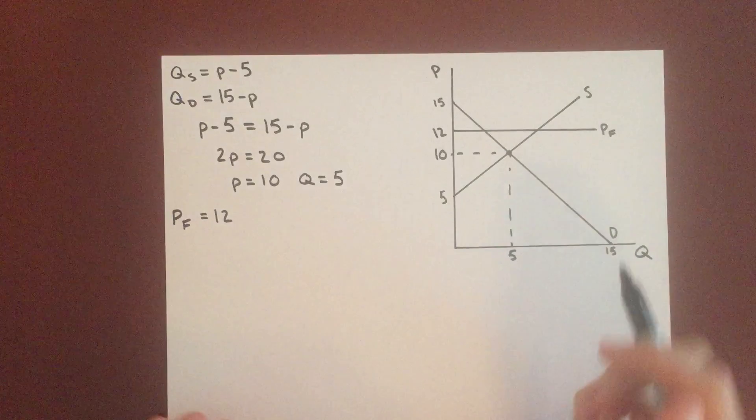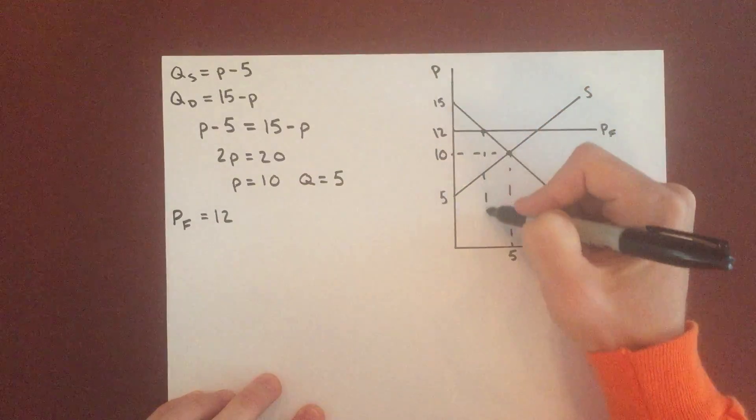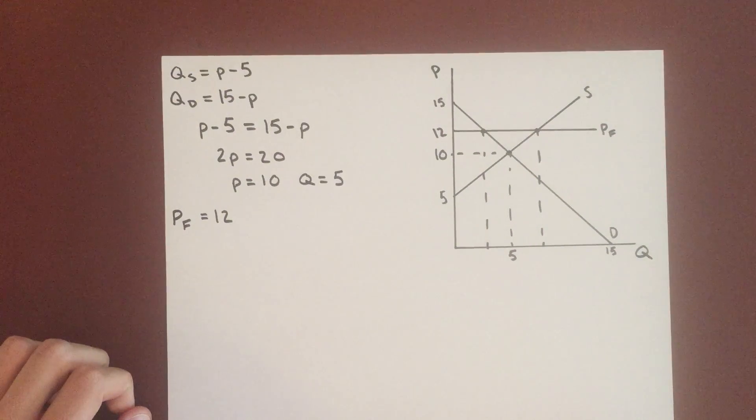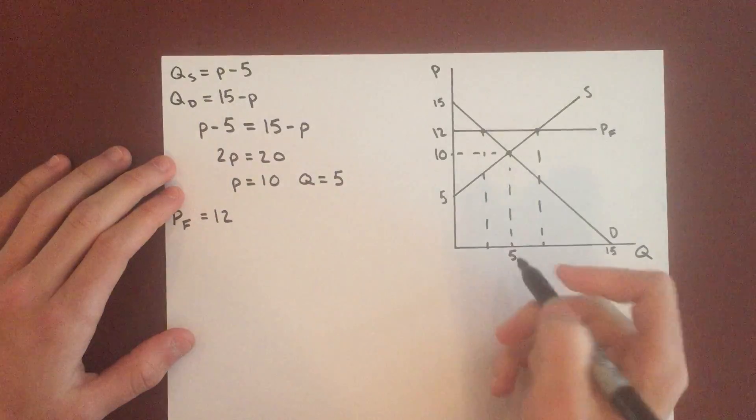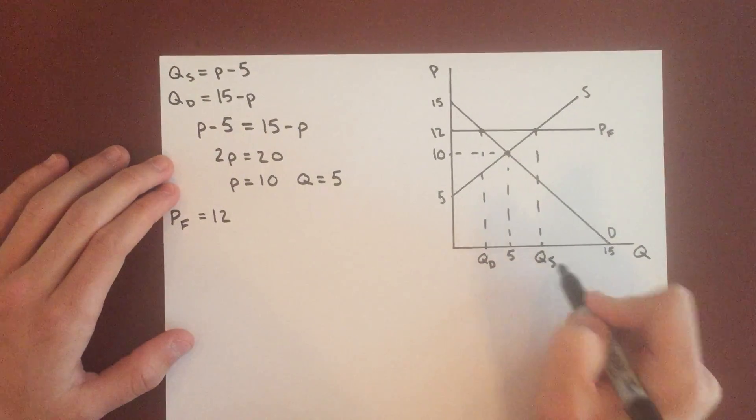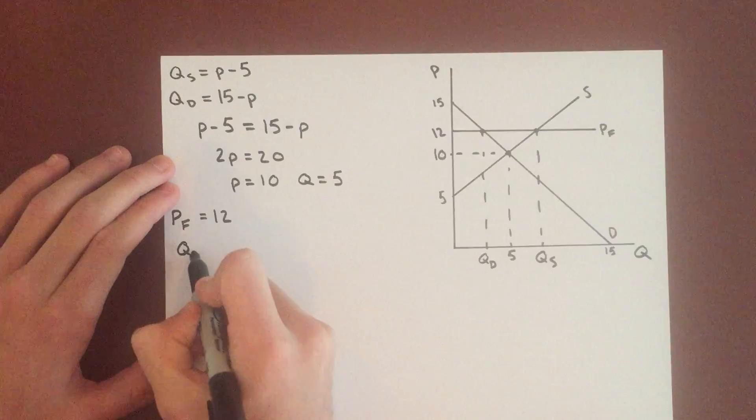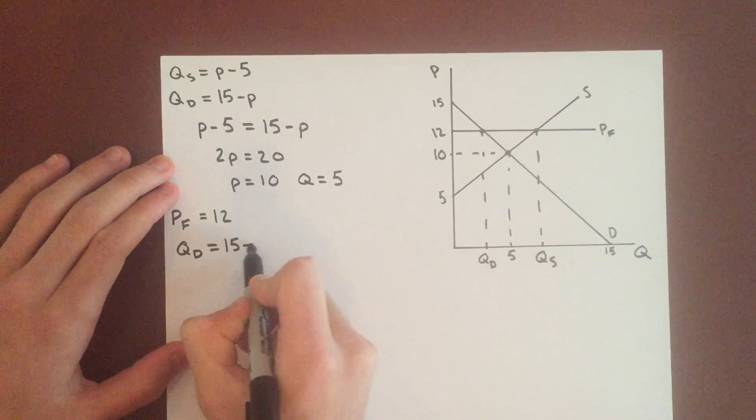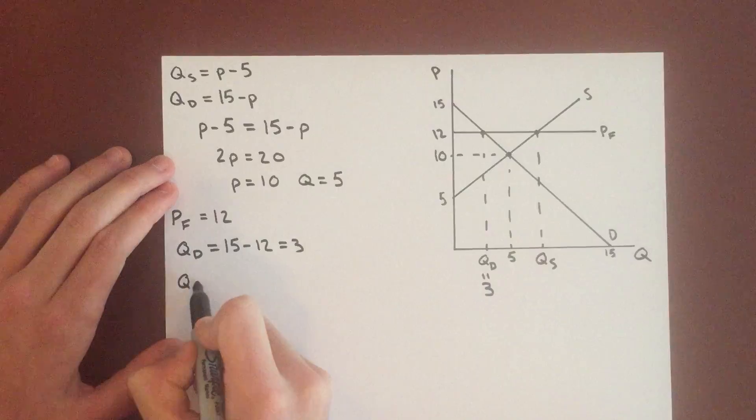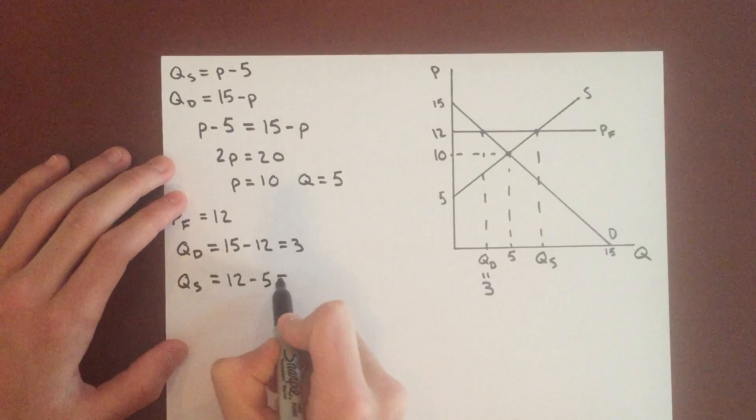So now we can see that the quantity demanded and quantity supplied will not be equal to each other. But the question is how different will these two values be? So it's pretty simple to find. In order to find quantity demanded, which is this value here, we can plug the new price into the quantity demanded function. So if price is 12, quantity demanded is 15 minus 12, and that's equal to 3. Write that in. And then for the quantity supplied, we can say 12 minus 5, which equals 7.